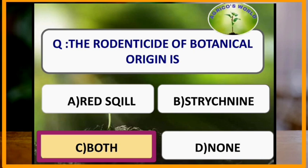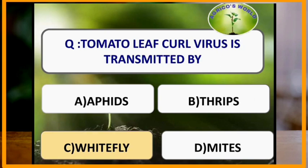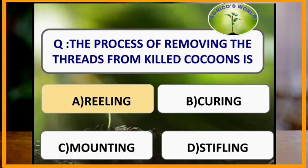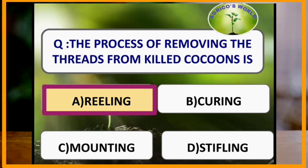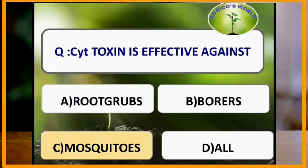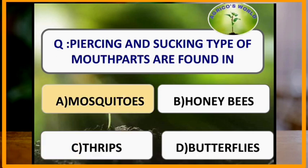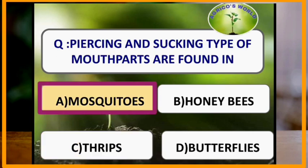Rodenticides of botanical origin include red squill and strychnine. Tomato leaf curl virus is transmitted by whitefly. The process of removing threads from killed cocoons is called reeling. Cytotoxin is effective against mosquitoes. Piercing and sucking type of mouthparts are found in mosquitoes.